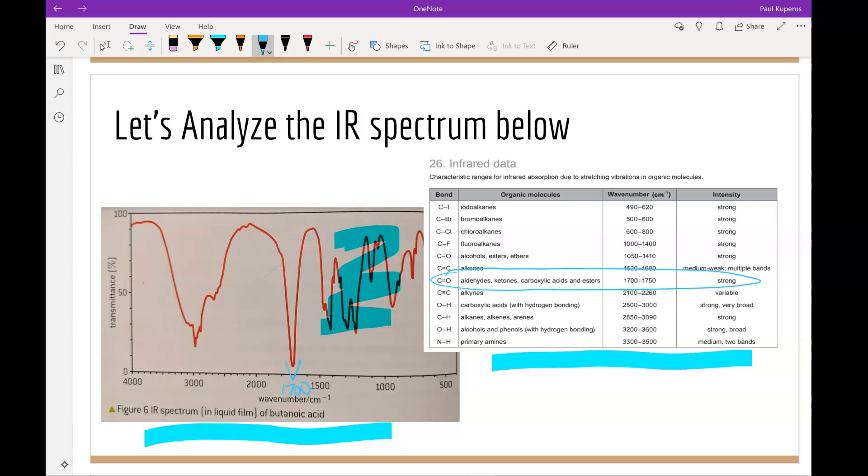So we likely have a C double bond O, which could be an aldehyde, a ketone, carboxylic acid, or an ester.